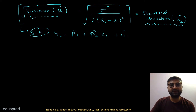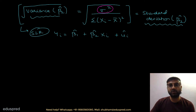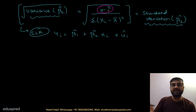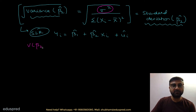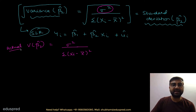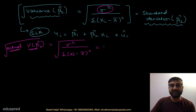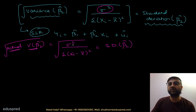Think of it this way: the formula for variance of beta 2 hat contains the term sigma square. If you remember the assumption of homoscedasticity, this sigma square is the variance of the population error — it is some constant. So the expression for the actual variance of beta 2 hat is sigma square divided by summation of xi minus x bar whole square. If you take the square root of the actual variance of beta 2 hat, you get the standard deviation of beta 2 hat.